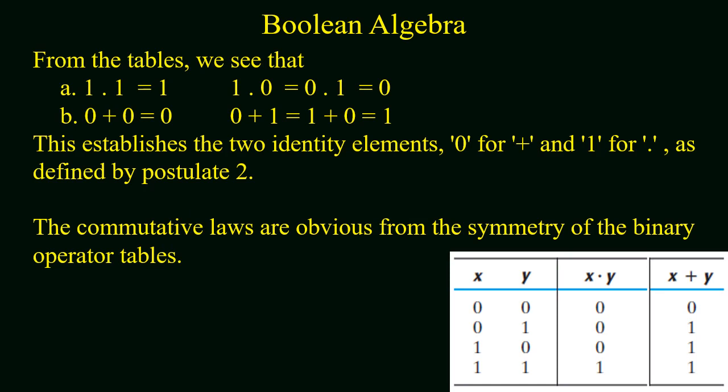Now if you again look at the table, we can take the following results. First one is that 1 dot 1 is equal to 1, and 1 dot 0, or changing the order 0 dot 1, gives 0. Similarly, 0 plus 0 equals 0, and 0 plus 1 or 1 plus 0 gives 1.